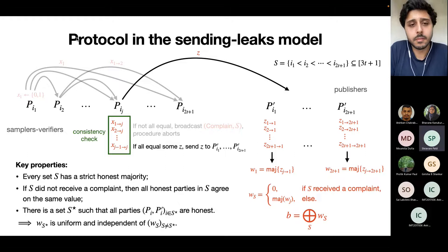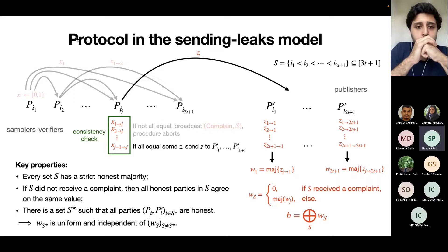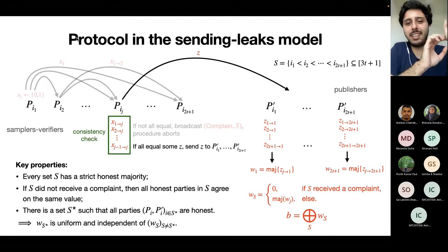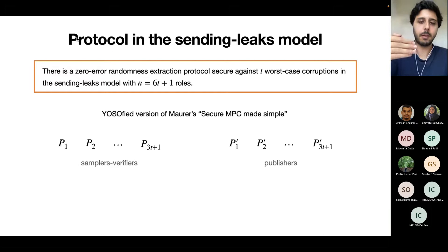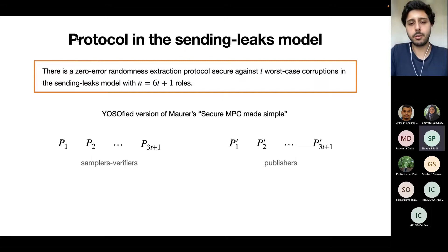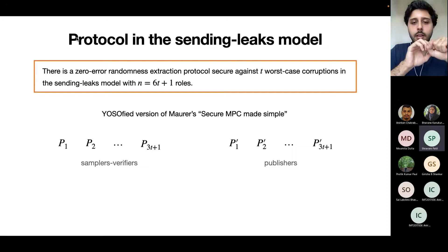You mentioned 3T+1 parties in samplers/verifiers and publishers, but N was said to be 6T+1. I'm explaining a slightly suboptimal version. To remove one party, you take the last sampler/verifier and the first publisher and merge them, which removes one role. This still works and gives the actual 6T+1 result.